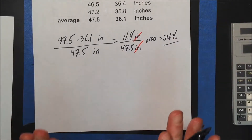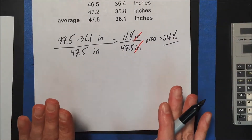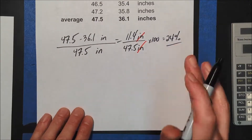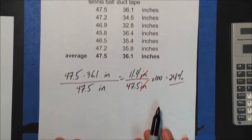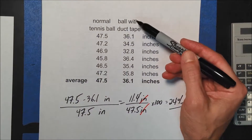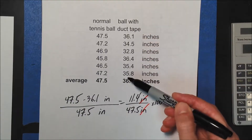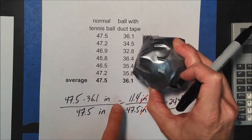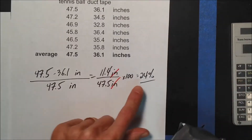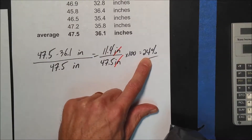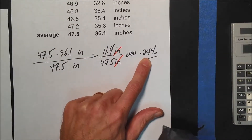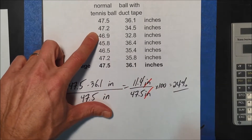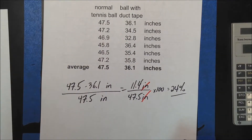The key is how this result is stated. It's not just 24%. The phrase would be: when duct tape is put on the ball, the ball with the duct tape will bounce a 24% shorter distance than a normal tennis ball. That is key to say that.